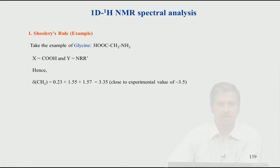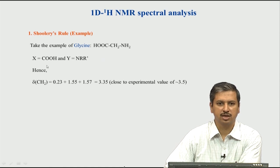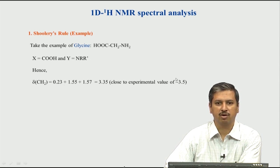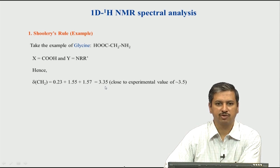Let us apply this to the amino acid glycine. In glycine, X is COOH and Y is NRR. Using Shulthry's rule, we add 0.23 + 1.55 (for COOH) + 1.57 (for NRR) to get approximately 3.35 ppm. Experimentally, when you record a 1D proton spectrum of glycine, you get a value around 3.5 ppm — a very good match within a small error. This is a theoretical empirical prediction that matches the experimental chemical shift well.